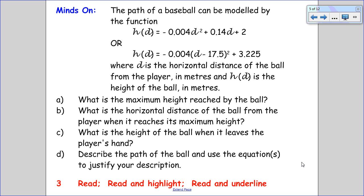So if we consider this first example, the path of a baseball can be modeled by the function h(d) = -0.004d² + 0.14d + 2, or h(d) = -0.004(d - 17.5)² + 3.225, where d is the horizontal distance of the ball from the player in meters, and h(d) is the height of the ball in meters.